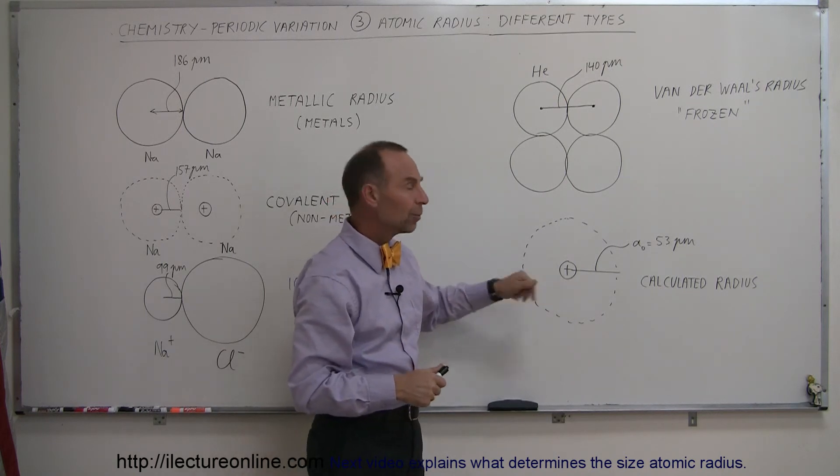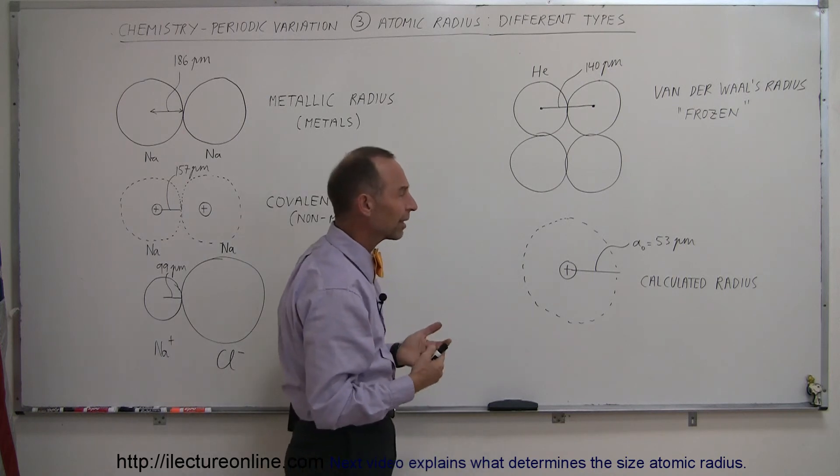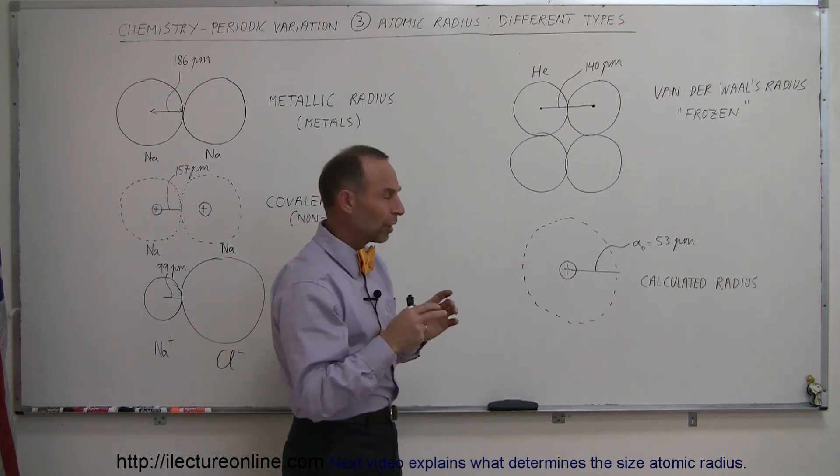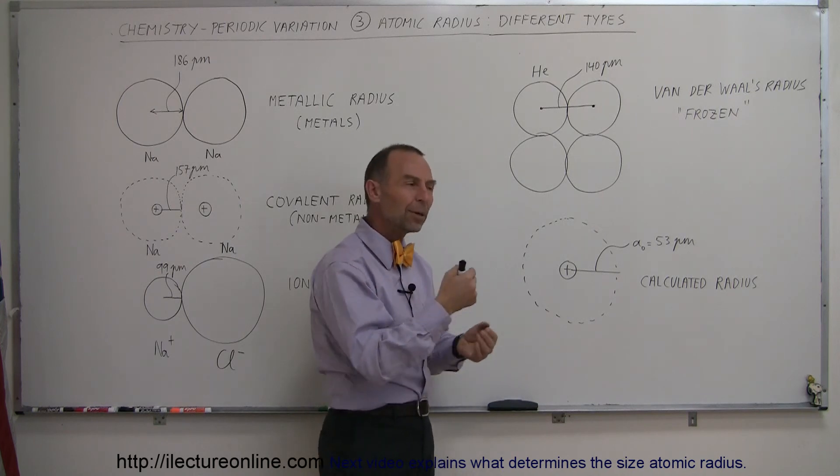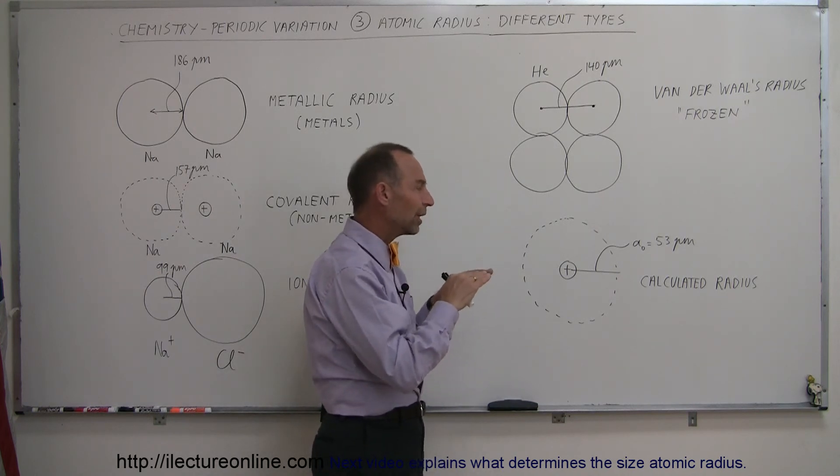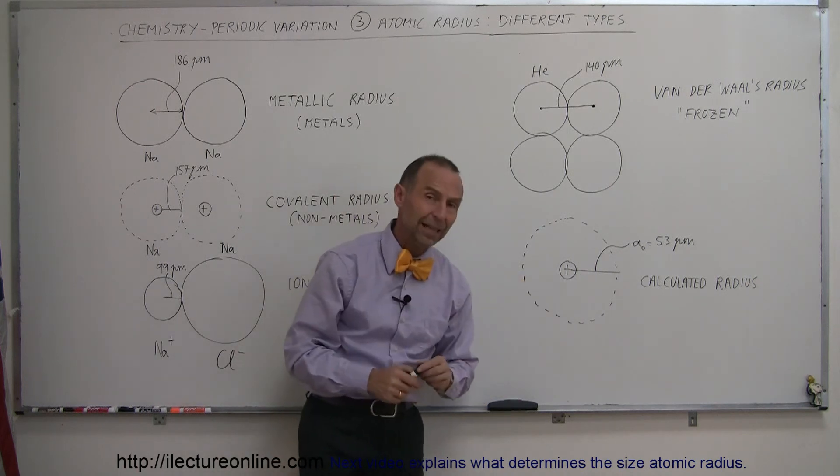And so we can do that for smaller atoms. We will find calculated values for lithium and boron and things like that where the number of protons in the nucleus and number of electrons around in the orbit are relatively small and we can pretty well figure out roughly what the most probable radius would be of those atoms and so we can find the calculated radius as well.